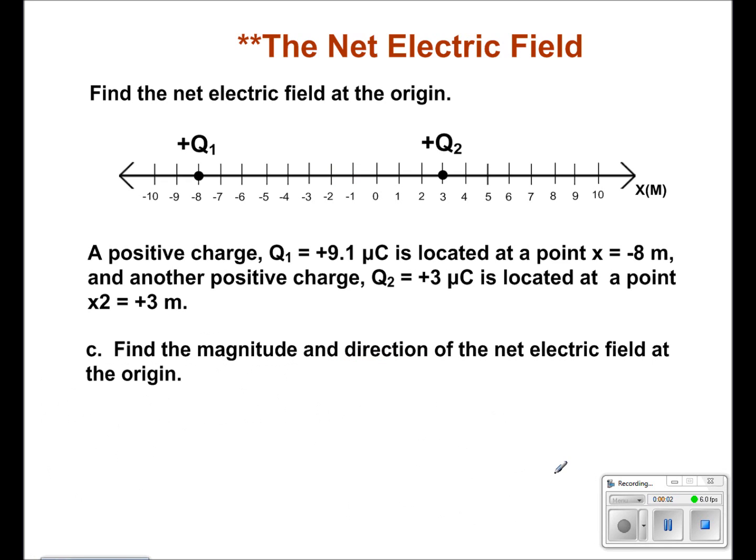For the final part of this problem, we want to find the net electric field at the origin. As you can see in the diagram, the smaller E1 is shown in blue, and the larger E2 is shown in red.